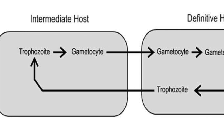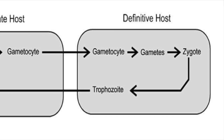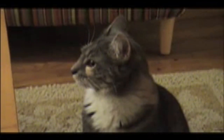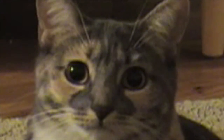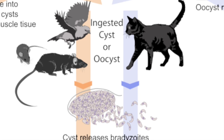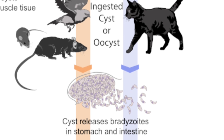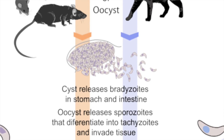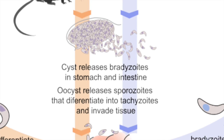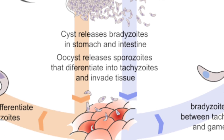The definitive host — that is, the organism that supports the adult form of Toxo — is felines. But all warm-blooded animals can be infected. Infection occurs via ingestion of a cyst or an oocyst. An ingested cyst will release bradyzoites in the stomach and intestine. An oocyst will release sporozoites that differentiate into tachyzoites and invade the tissues.